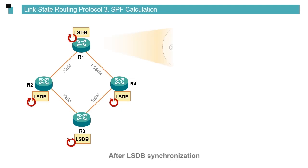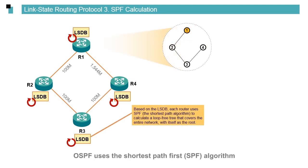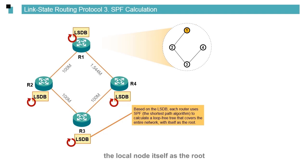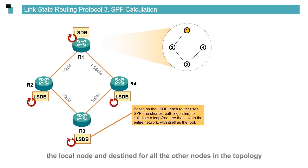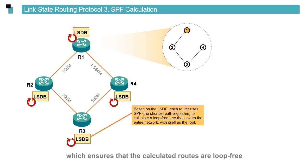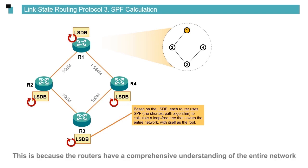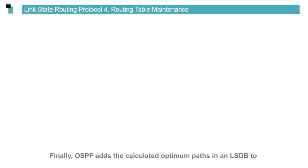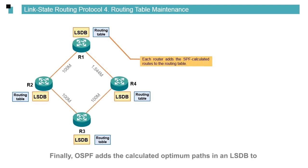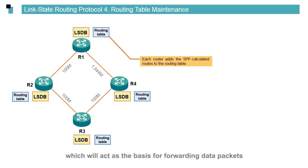An LSDB can be simply understood as a description of the entire network topology. After LSDB synchronization, OSPF uses the shortest path first, SPF algorithm. This algorithm calculates a loop-free tree structure with the local node itself as the root. The tree represents all the shortest paths originated from the local node and destined for all other nodes in the topology. The SPF algorithm is the core of the OSPF protocol, which ensures that the calculated routes are loop-free, because the routers have a comprehensive understanding of the entire network. Finally, OSPF adds the calculated optimum paths to a routing table to generate route forwarding entries, which will act as the basis for forwarding data packets.